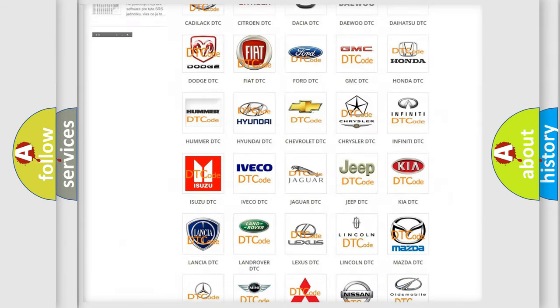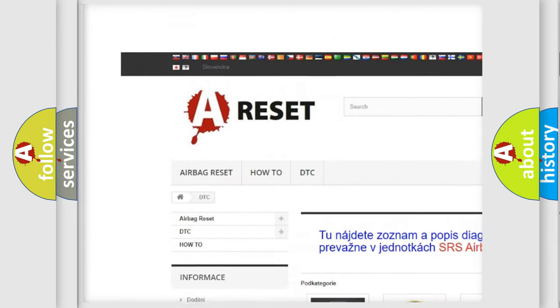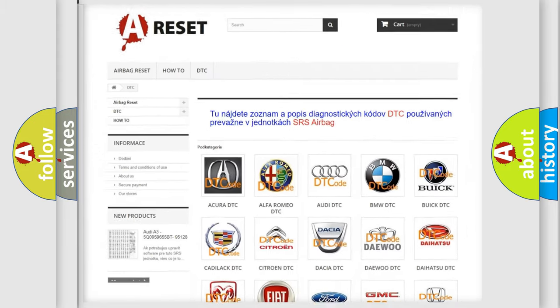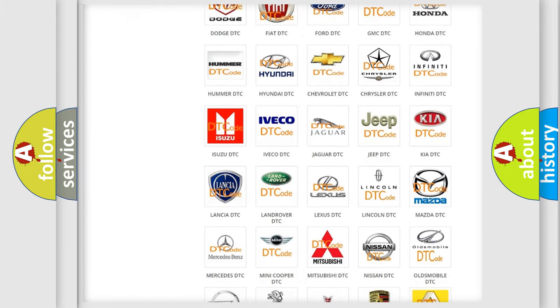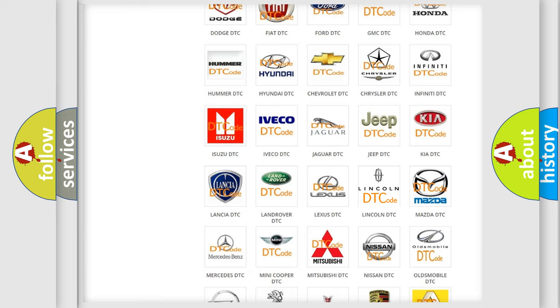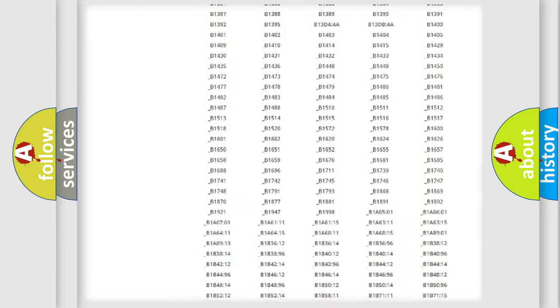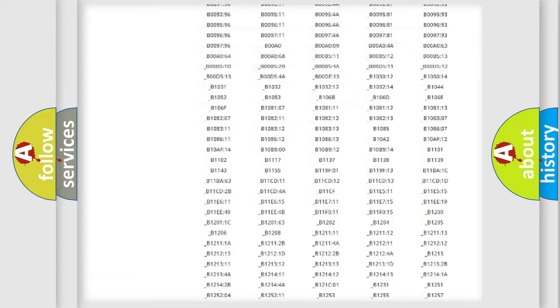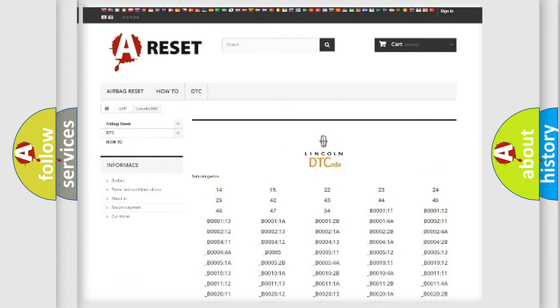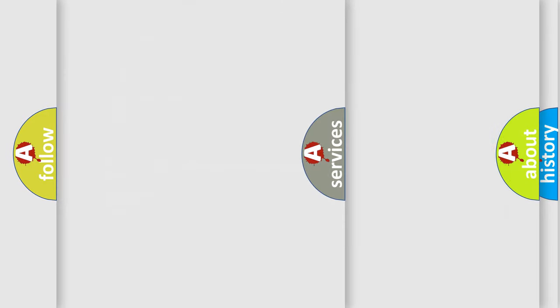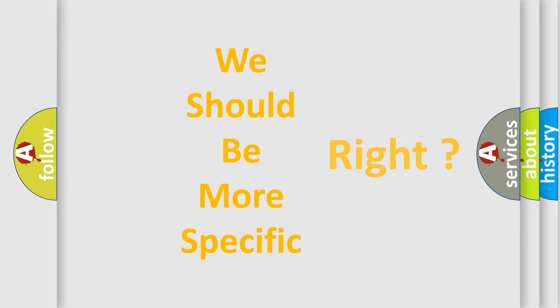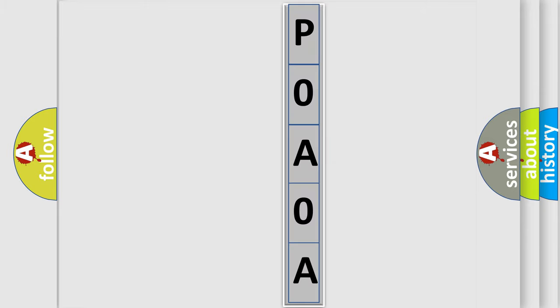Our website airbagreset.sk produces useful videos for you. You do not have to go through the OBD2 protocol anymore to know how to troubleshoot any car breakdown. You will find all the diagnostic codes that can be diagnosed in all vehicles, and many other useful things. The following demonstration will help you look into the world of software for car control units.